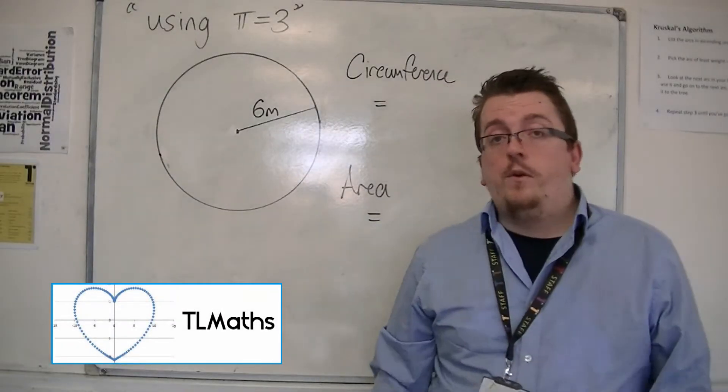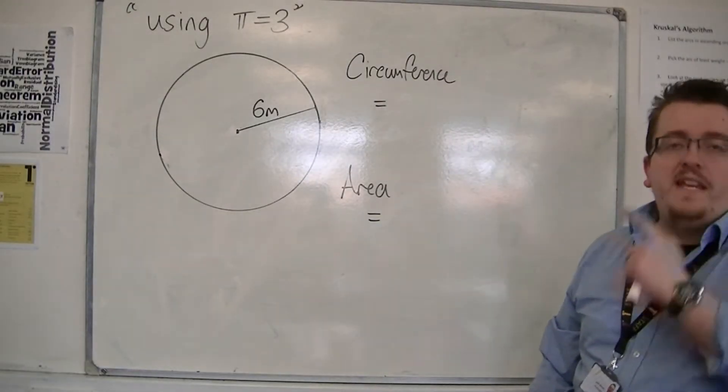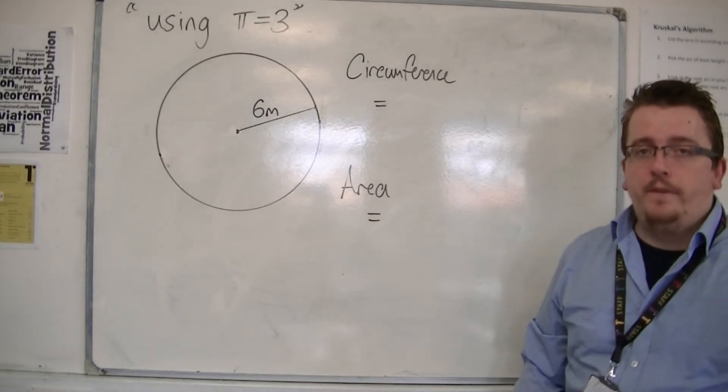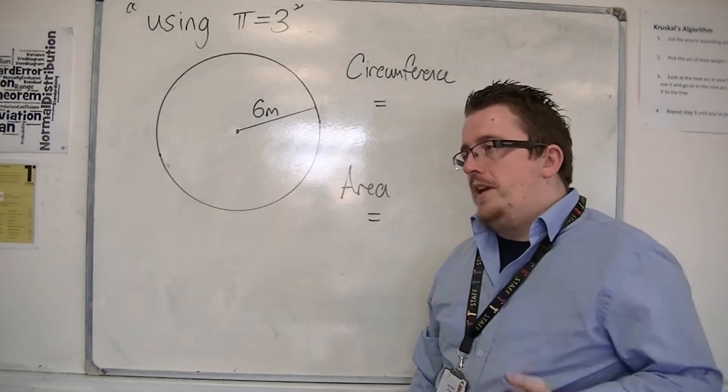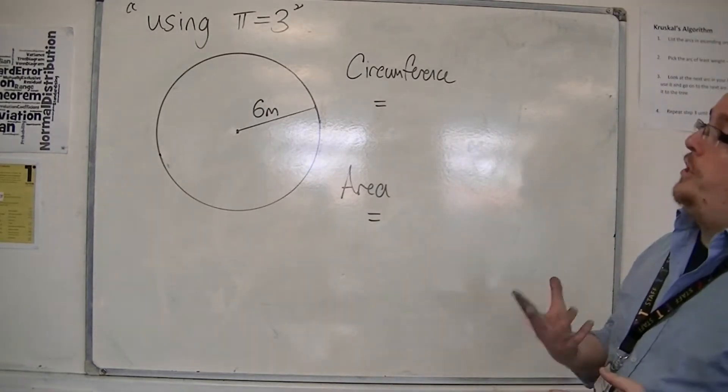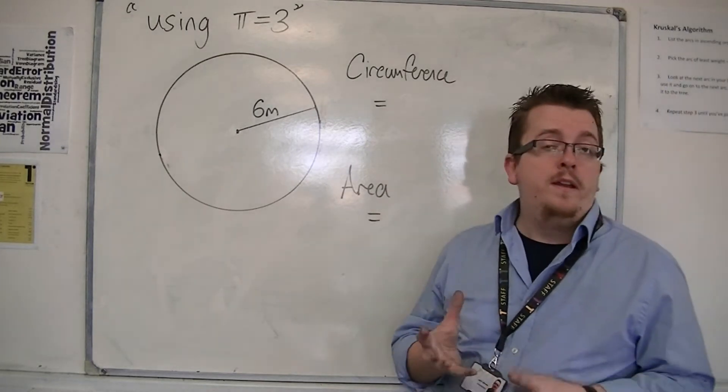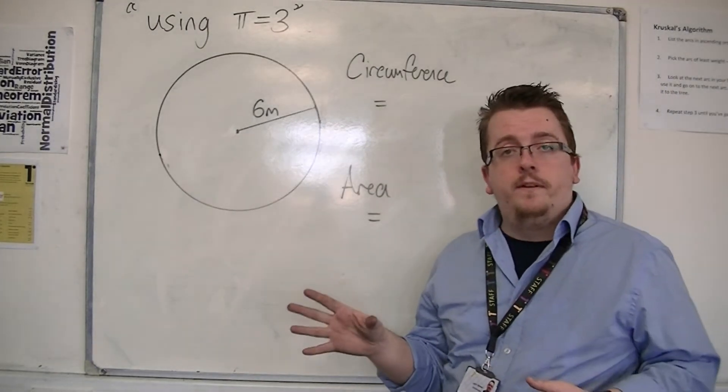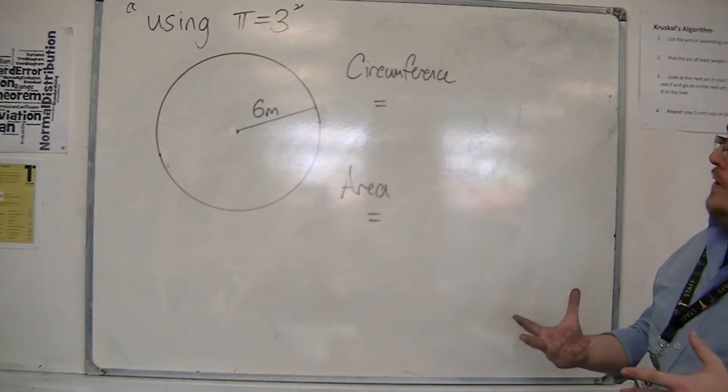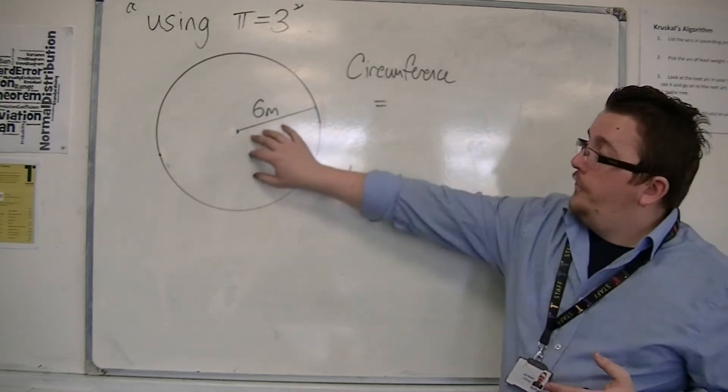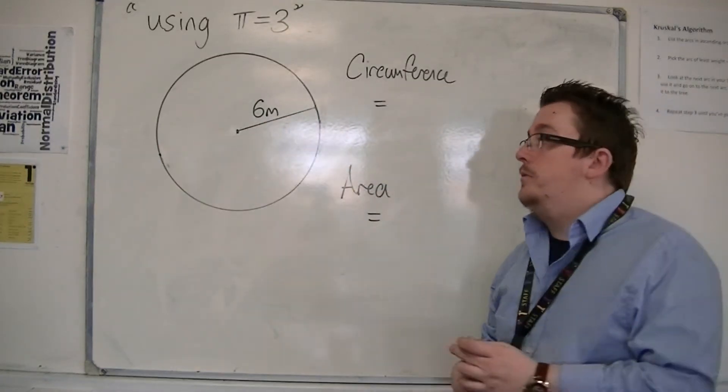So in the previous video, I showed you how to leave your answers in terms of pi. It could also be that on a non-calculator paper, you could be asked to use an abbreviated form for pi, like pi equals 3. So you could still get the same problem where you're being asked to find the circumference and area of the circle.